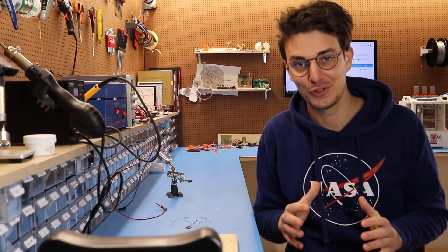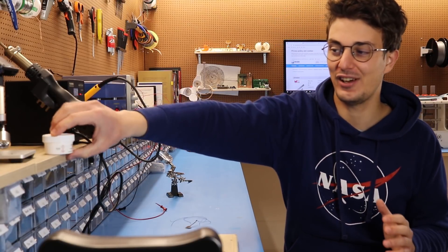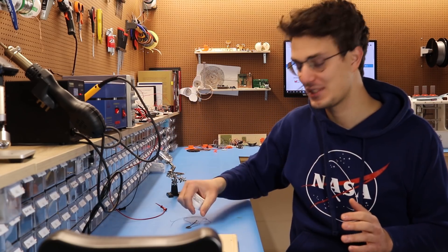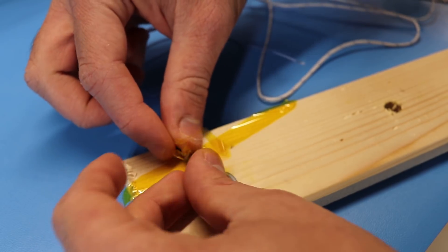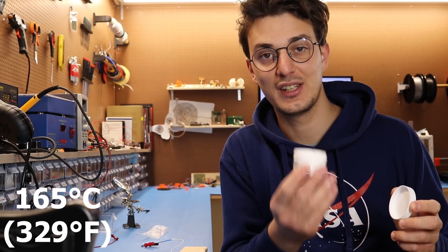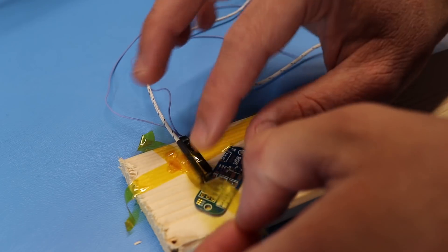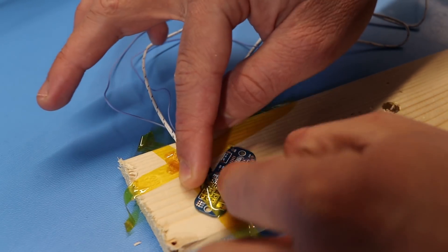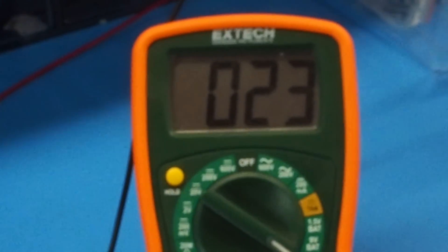To kick off this experiment I want to keep things simple and see if I can reflow solder paste with my PCB actuator. This solder paste reflows at around 165 degrees Celsius so I have connected a thermocouple to monitor the temperature of the PCB and I'm just going to increase the voltage until we reach that temperature.